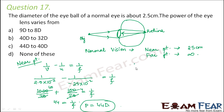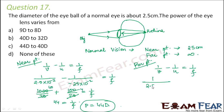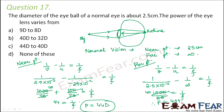For the far point, using the same lens formula: v = 2.5 × 10⁻² m, u = infinity. So 1/f = 1000/25 = 40. Therefore the power for the far point is 40 diopters. The power of the lens varies from 44 diopters to 40 diopters. This is option C.